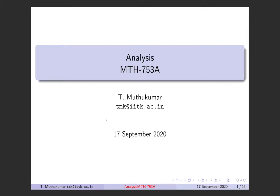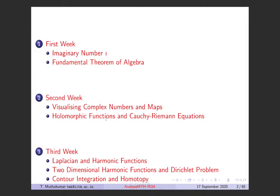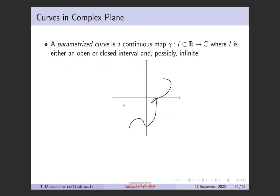Welcome back. In this lecture we are going to introduce contour integration and homotopy theory. A parametrized curve is a continuous map gamma from some interval of R to the complex plane C. This interval could be a closed interval, open interval, bounded or unbounded. For each point in the interval, gamma associates a point in the complex plane, so as you move along the interval you move along some curve in the complex plane.